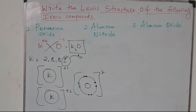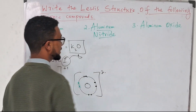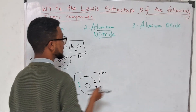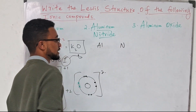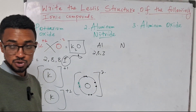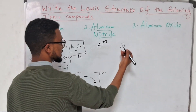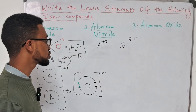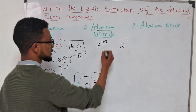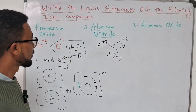Now let's look at aluminum nitride. Here we have an aluminum ion and a nitride ion. Aluminum has the electron configuration 2, 8, 3, meaning it needs to lose three electrons to become stable, giving aluminum a +3 charge. Nitrogen has the electron configuration 2, 5, meaning it needs three electrons to become stable, so the charge on the nitride ion will be -3.